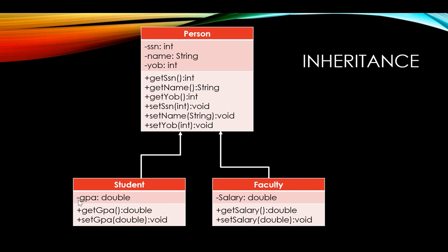In the subclass or child class we add what is specific. The GPA only applies to students, so we add that variable and any methods that apply only to students. Same thing for faculty — salary applies only to faculty, so we add that instance variable and related methods there. The big advantage of inheritance is we write common code once and reuse it in as many subclasses as we want. Person is called a superclass or parent class; student and faculty are called subclasses or children classes.